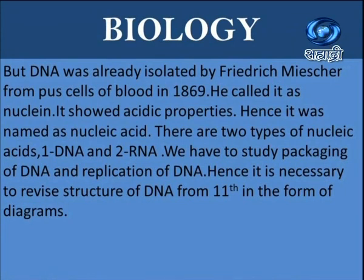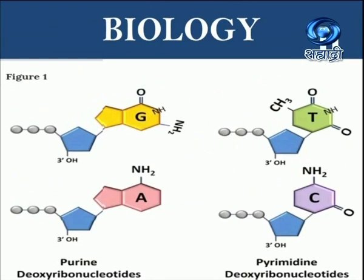We have to study packaging of DNA and replication of DNA, hence it is necessary to revise the structure of DNA from 11th standard in the form of diagrams. At the molecular level, we observe deoxyribonucleotides. Purine molecules include guanine and adenine. Pyrimidine molecules are also present — deoxyribonucleotides with double-ring molecules include adenine and guanine, while thymine and cytosine are also nucleotides found in DNA. Uracil is not found in DNA.